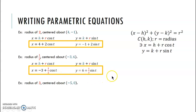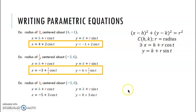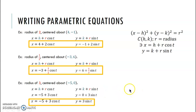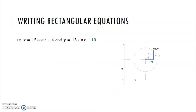Let's try another example: radius of 3, centered at (−5, 0). Try this on your own — pause the video, try it, then play again to check your answer. The answer is: x = −5 + 3·cos(t), y = 3·sin(t).